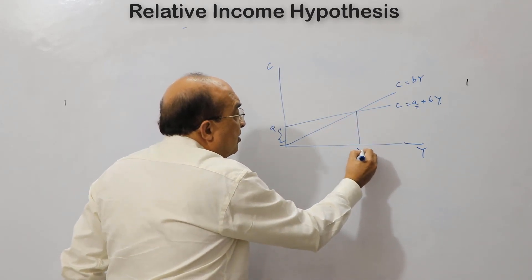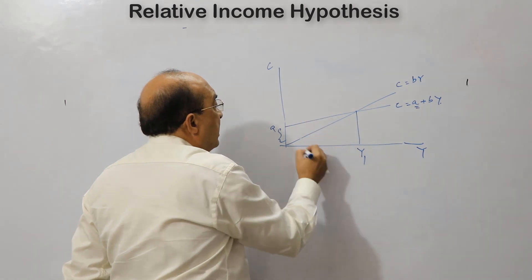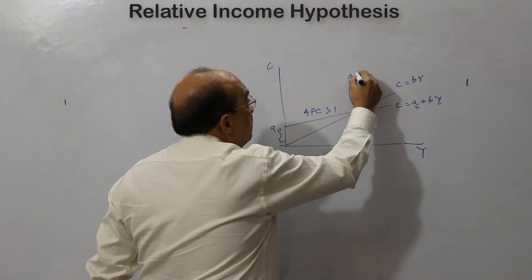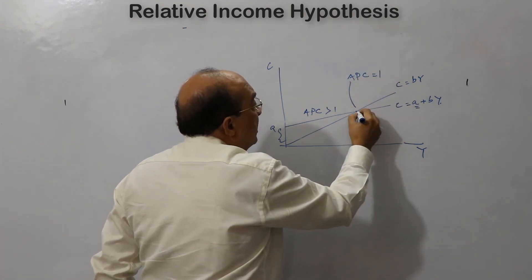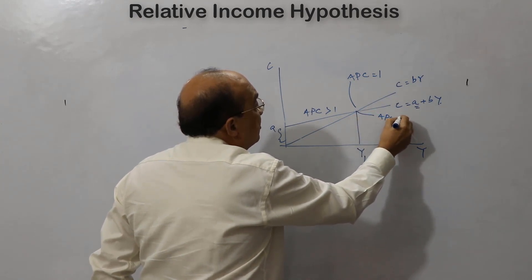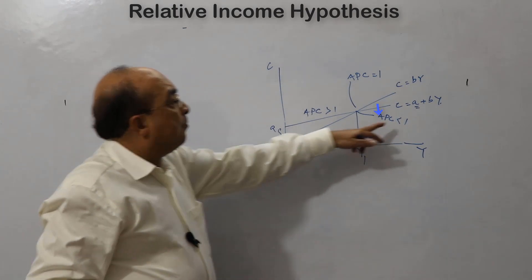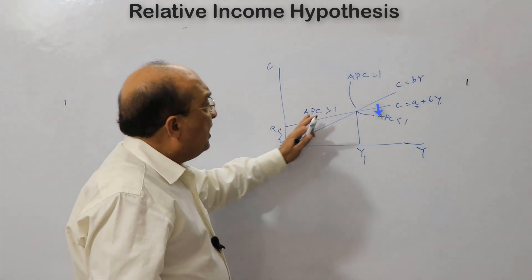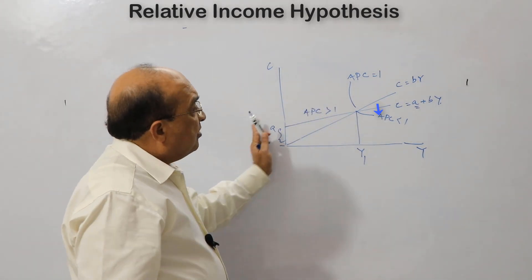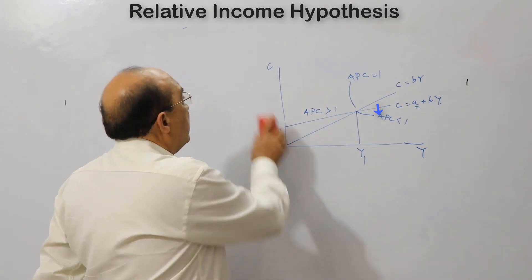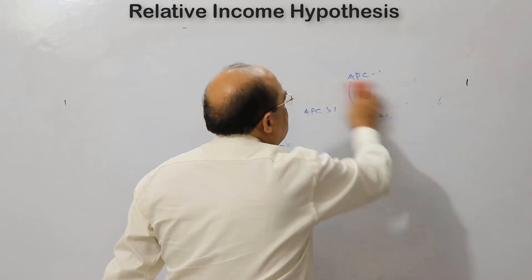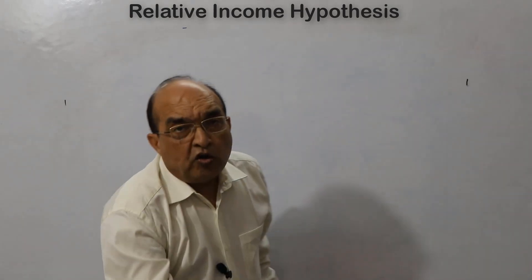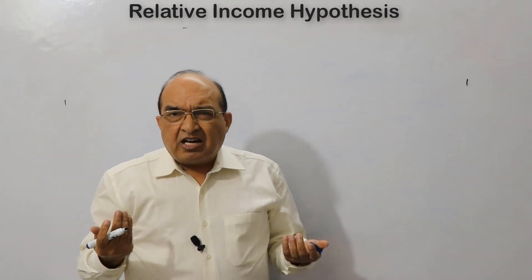The APC is declining — it is not constant. Up to income level Y1, APC is greater than 1; at that level of income APC equals 1; and after that, APC is less than 1, while the marginal propensity to consume is constant in this case. This holds unless the consumption function is curvilinear.